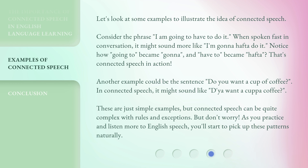Another example could be the sentence 'Do you want a cup of coffee?' In connected speech, it might sound like 'D'ya want a cuppa coffee?' These are just simple examples, but connected speech can be quite complex with rules and exceptions. But don't worry — as you practice and listen more to English speech, you'll start to pick up these patterns naturally.